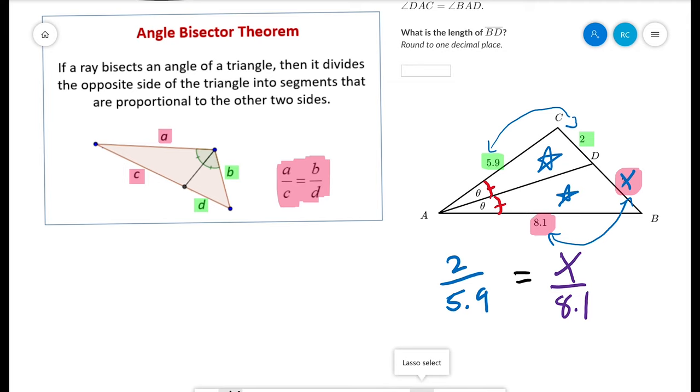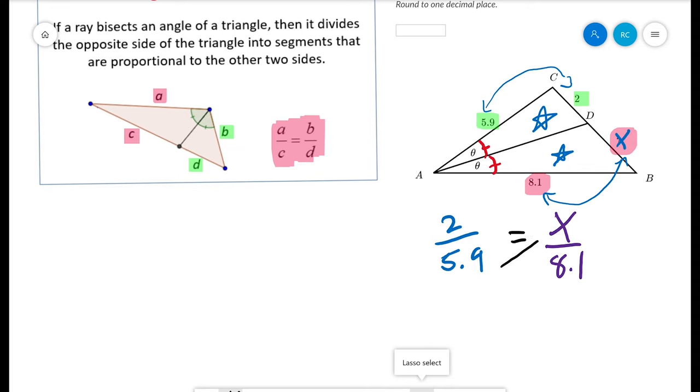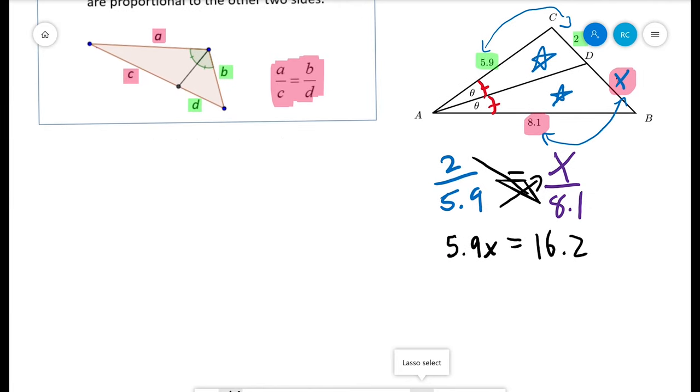And now we're back to cross-multiplying. 5.9 times x is 5.9x. 2 times 8.1 is 16.2. Divide both sides by 5.9.